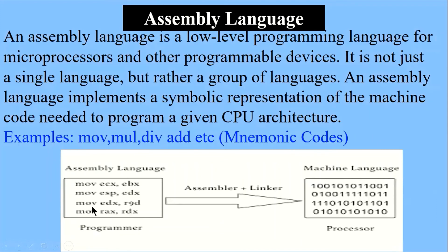In assembly language, we use an assembler — a language translator — that converts these mnemonic codes into machine language, because the computer can only understand binary language in the form of 0s and 1s. The computer cannot understand mnemonic codes or high-level language commands, so it is necessary to convert them into machine code.